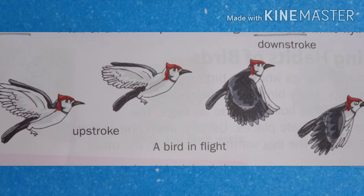The downstroke movement means the downward and forward movement of the wings. The tail of a bird helps it to change direction while flying.